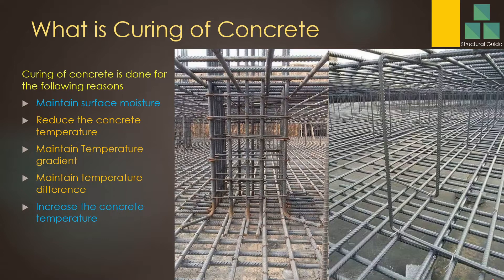Those cracks will affect the strength and durability of the structure. So we have to reduce the temperature of the concrete. Second, we have to maintain the temperature gradient — that is the drop of temperature from core to surface per meter — which is generally about 20 degrees. We also have to maintain the temperature difference between core and surface at a certain level, generally around 25 degrees.